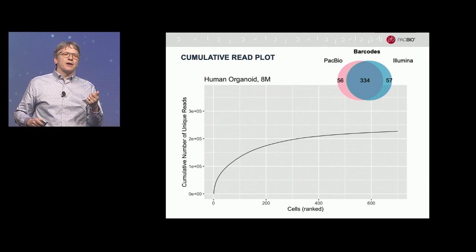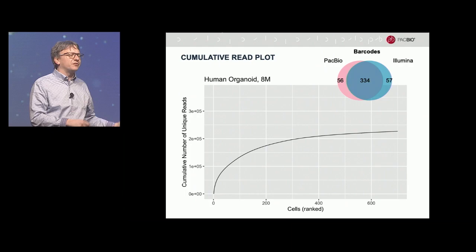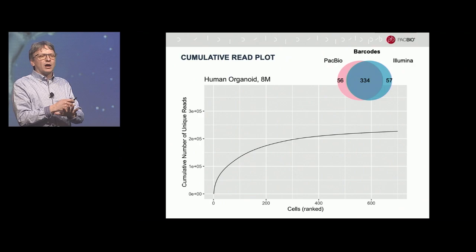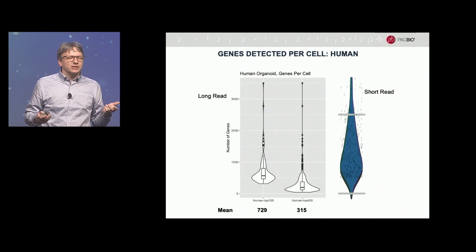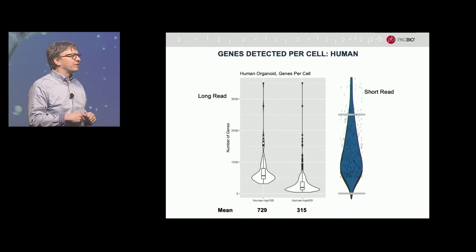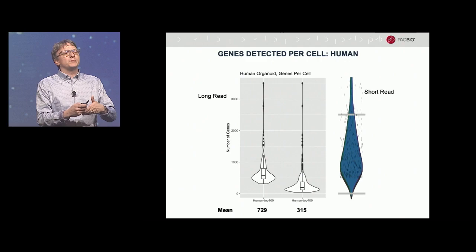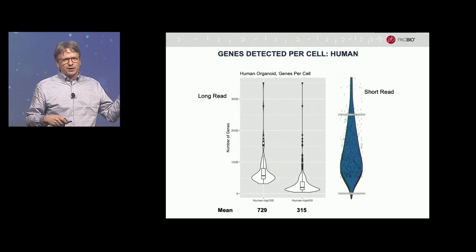Overall, we aimed to turn down the knob on the number of cells — we shot for around 400 cells in these organoids to capture a number of different cell types. We called barcodes from both the CCS reads and the Illumina sequencing independently, and found that most of the barcodes overlap. As you'd predict, with long reads we don't get as many genes per cell — about 315 genes per cell on average, or about 729 for the top 100 barcodes. Remember, this is genes per cell, so there could be many isoforms within a single cell — it's a different type of data.